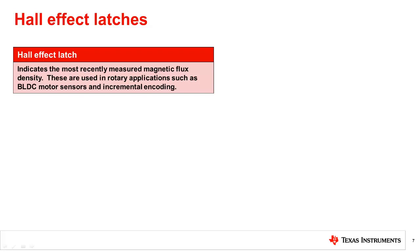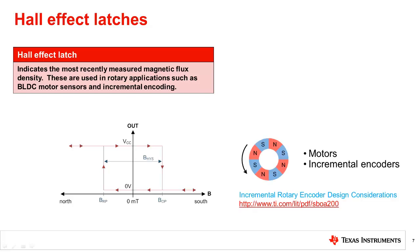A Hall effect latch indicates the most recently measured magnetic flux density. Alternating north and south poles are required to toggle latch devices. These are used in rotary applications such as BLDC motor sensors and incremental encoding. Shown here is the output graph of a Hall effect latch. Applying a south magnetic pole near the top of the device causes the output to drive low. A north pole causes the output to drive high. And the absence of a magnetic field causes the output to continue to drive the previous state, whether low or high. For more information on considerations behind the common rotary encoding sensing technologies, check out our tech note at the following link.